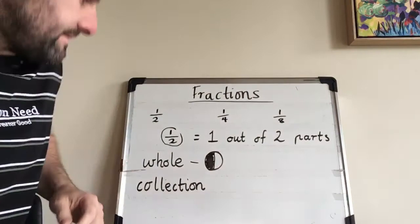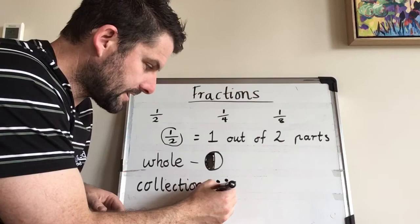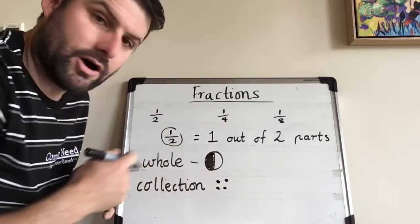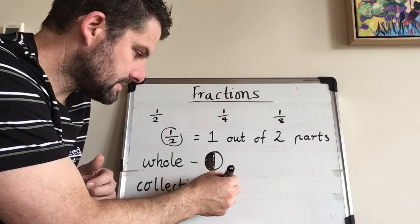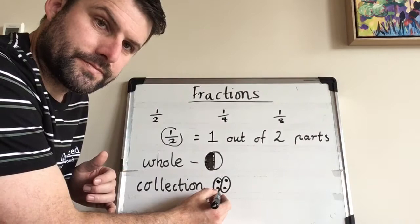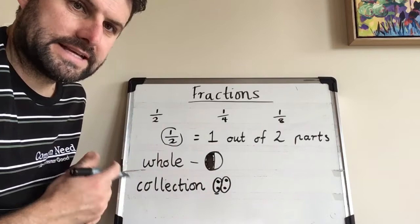If I have four dots. This ties in with division. So for one half, we're looking at one half of this collection of four. I need to break it into two parts. There we go. I've broken it into two groups and here's one of those groups. So half of four is two. There's one half of four.